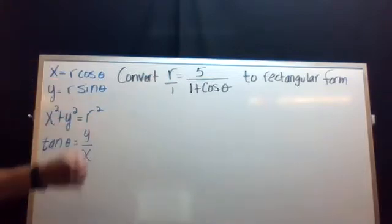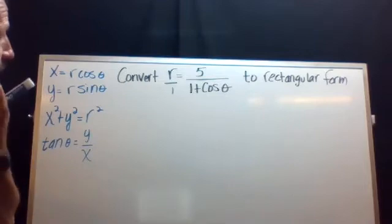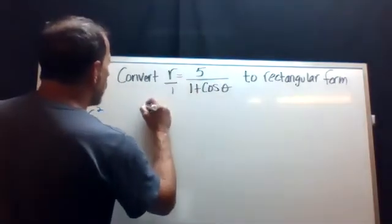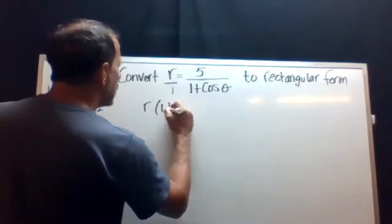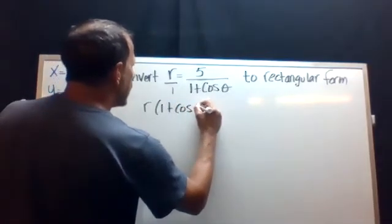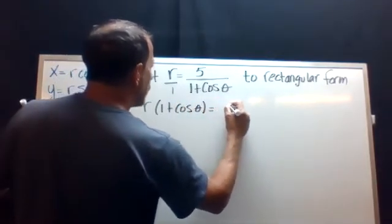And of course, r cosine theta is your x value. So by cross multiplying, we're going to get r times one plus cosine theta. And that equals five.